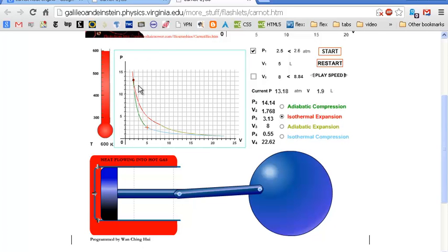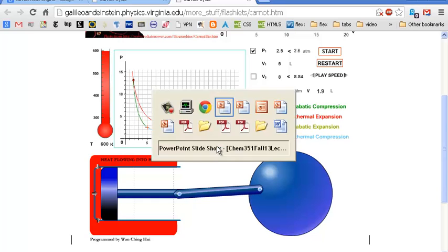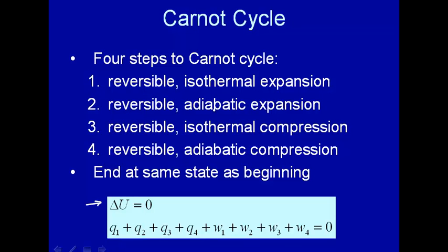Let's look in more detail at this pressure volume graph for the Carnot cycle. Again, isothermal, adiabatic, isothermal, adiabatic. Pressure, volume, graph.